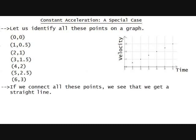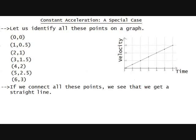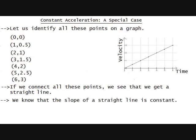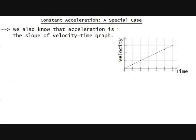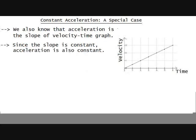If we connect all these points, we see that we get a straight line. We know that the slope of a straight line is constant. We also know that acceleration is the slope of the velocity-time graph. Since the slope is constant, acceleration is also constant.